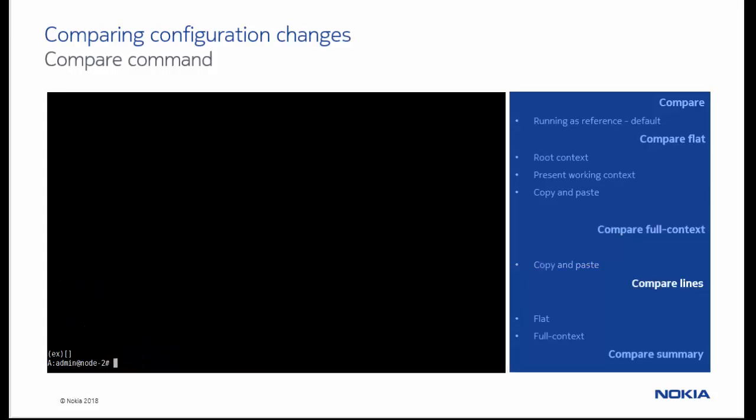In our next example, we change a metric of a routing protocol, and use the compare command to show the change.